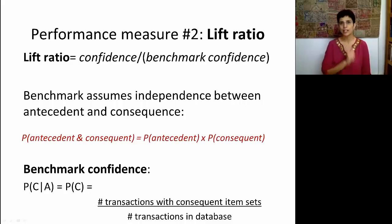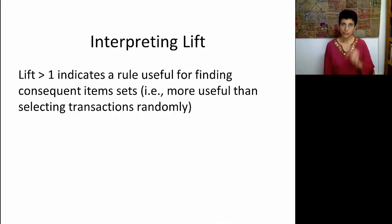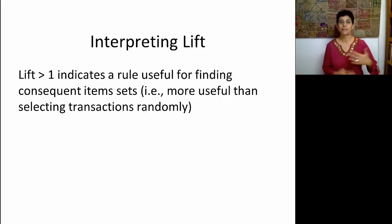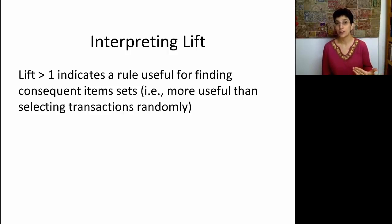We're calibrating our confidence by dividing it by this benchmark of independence. The lift ratio should be larger than 1. If it is larger than 1, this indicates the rule is more useful than a random choice. If the lift equals 1, it means our rule is no better than random — the numerator equals the denominator, which is based on independent events.